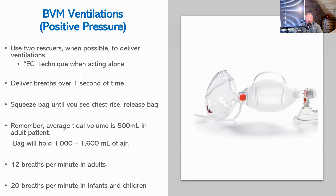For bag valve mask ventilations and positive pressure ventilation, use the EC technique if you are acting alone—this assures a better mask seal for the patient. The breath should be delivered over about one second. Squeeze the bag until you can see the chest rise, then release the bag, allowing the chest to fall. The average tidal volume is about 500 cc in an adult, and the bag holds 1,000 to 1,600 cc depending on the manufacturer, so you do not need the entire bag.